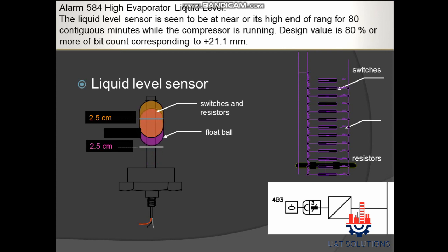Alarm 584 — High Evaporator Liquid Level: This alarm is shown when the liquid level sensor is seen to be at or near its high end of range for 80 contiguous minutes while the compressor is running.